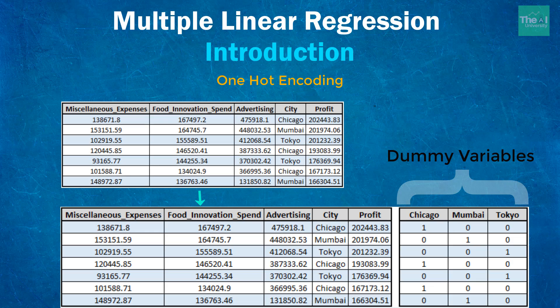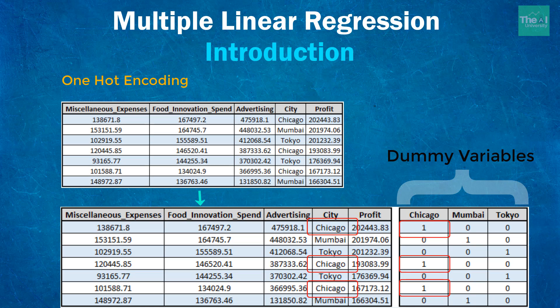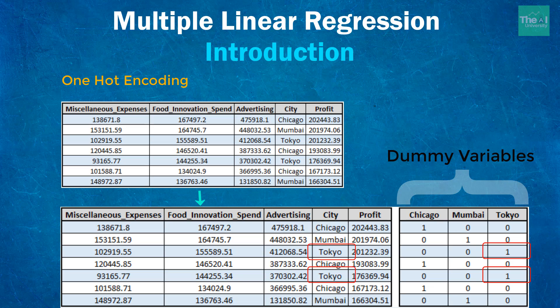We are expanding our dataset by adding additional columns: Chicago, Tokyo, and Mumbai. To populate these columns, for the Chicago column, insert a one wherever the city value is Chicago for that row, and insert zero in the Tokyo and Mumbai columns. Wherever there is a one for Chicago, we assume the restaurant is in Chicago; if zero, the restaurant is not in Chicago. You do the same exercise for the Tokyo and Mumbai columns respectively.